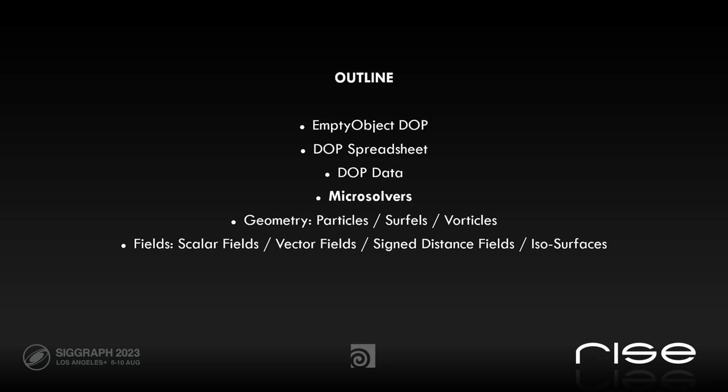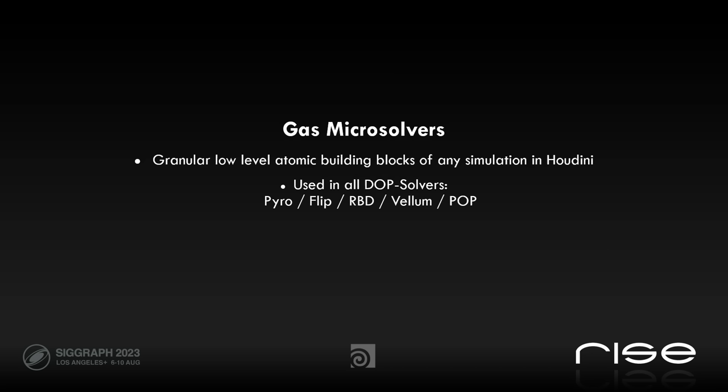The main outline for this, apart from the microsolvers, is we're going to look at the empty object DOP first, and then look at the DOP geometry spreadsheet, some DOP data and how it's handled, and then microsolvers of course. And then we will look at the different geometry types and different fields — scalar fields, vector fields, signed distance fields, isosurface, and implicit surfaces.